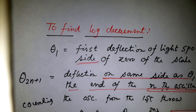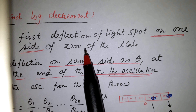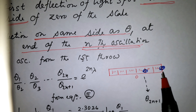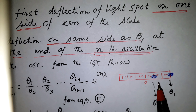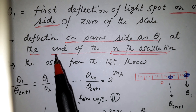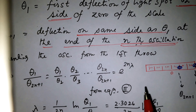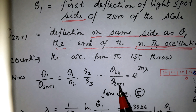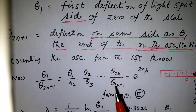To find the log decrement, let theta_1 be the first deflection of the light spot on one side of the zero of the scale. Theta_(2n+1) is the deflection on the same side as theta_1 at the end of the nth oscillation.